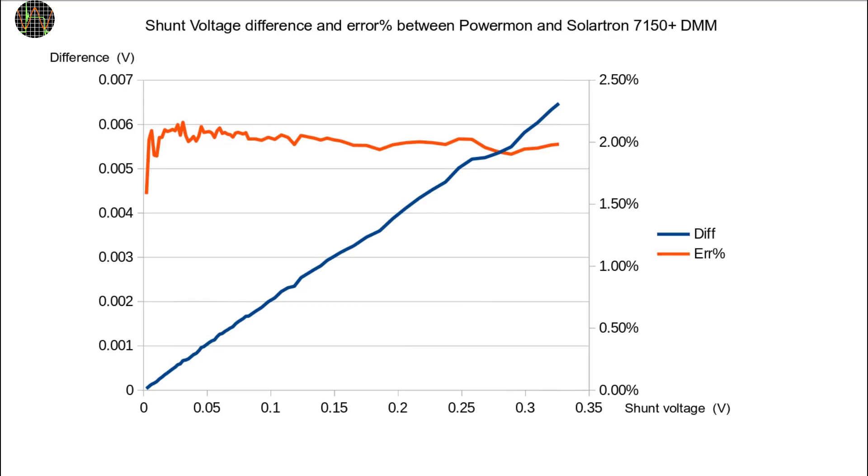This graph shows the result. The red error line is almost horizontal at about 2%. This means the error is large enough that it should be compensated but also that it can be easily fixed using the same slope and intercept method I explained in the previous Powermon video.